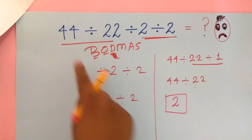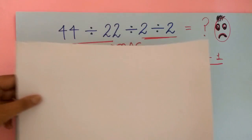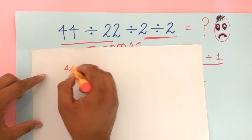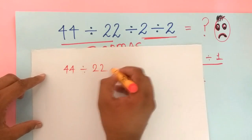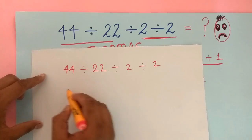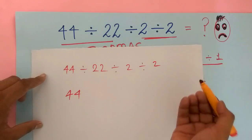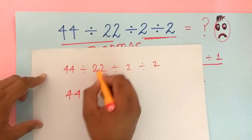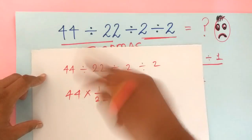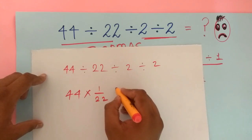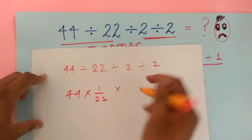option. You can write the question in terms of multiplication. For example, 44 divided by 22 divided by 2 divided by 2 can be written as 44. You can write division in terms of multiplication, so 22 would become 1 over 22. You have to flip the ratio or number, division would become multiplication, flip the number